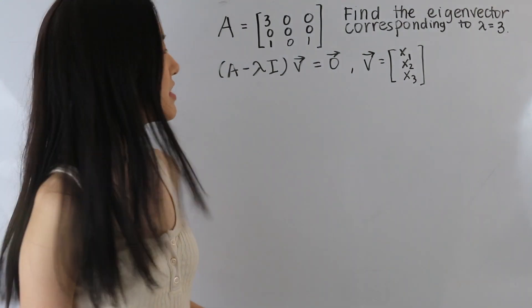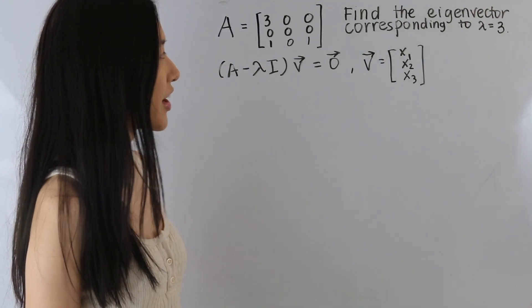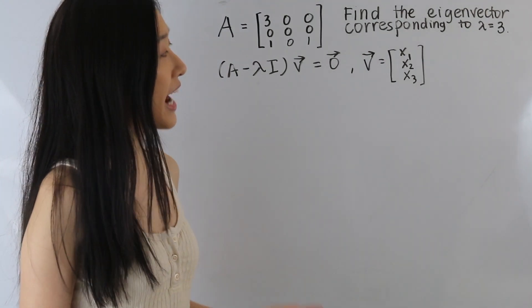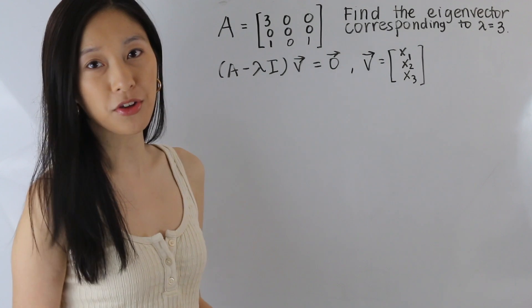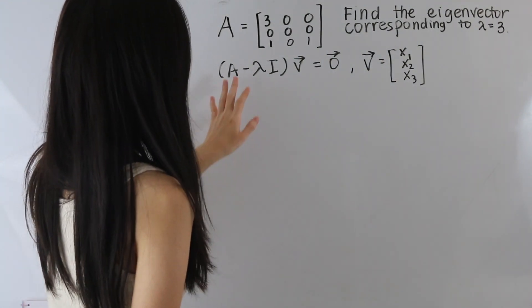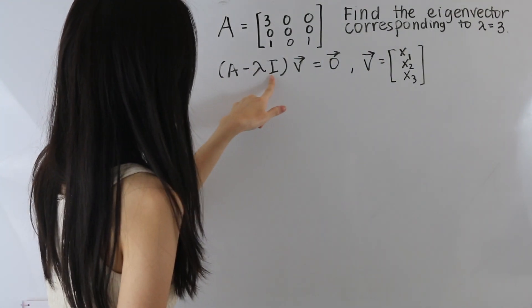So in this problem here, we're given this matrix A, and we are asked to find the eigenvector corresponding to the eigenvalue lambda is equal to 3. So let's start off by determining what A minus lambda I is equal to.